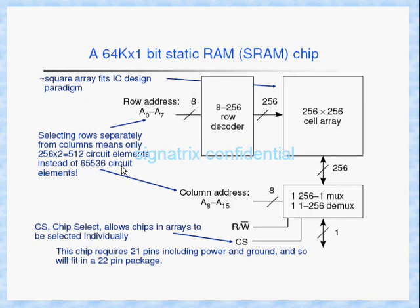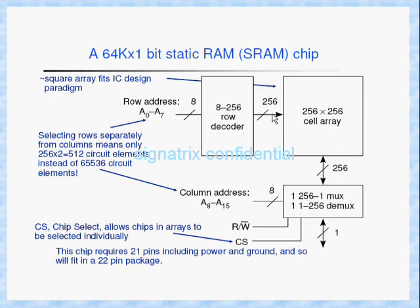The row address goes here and the column address goes here. The total address bus is 16 bits wide: bits 0 to 7 are the row address and bits 8 to 15 are the column address. The row address is given to the row decoder, which in turn picks the correct corresponding row from the cell array. Similarly, the column address picks the particular column.